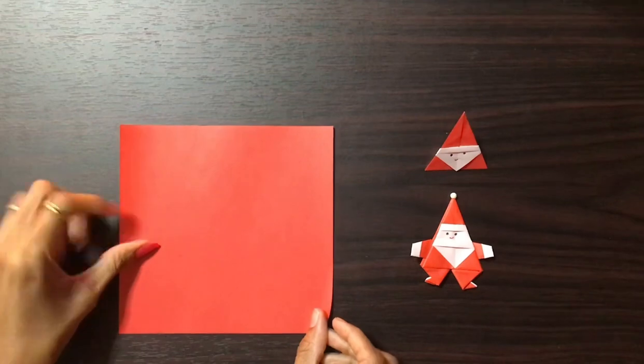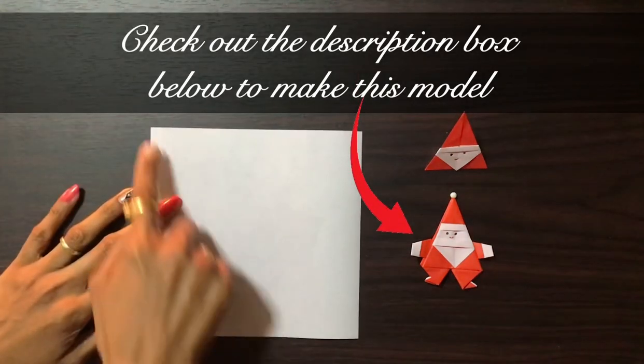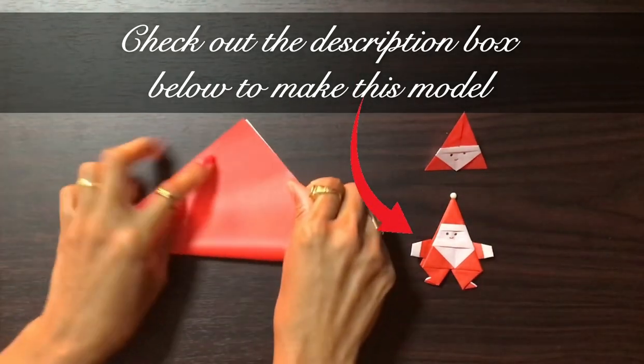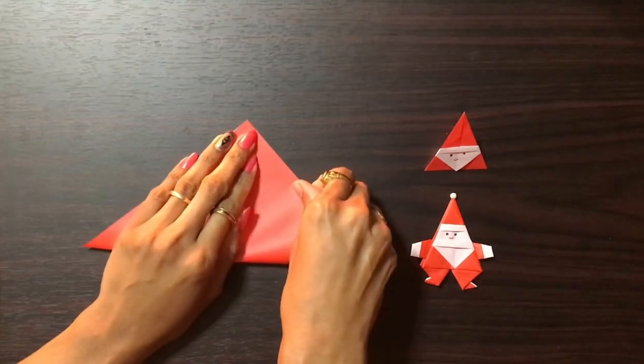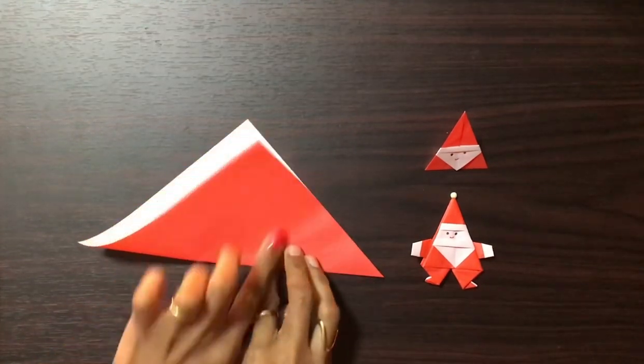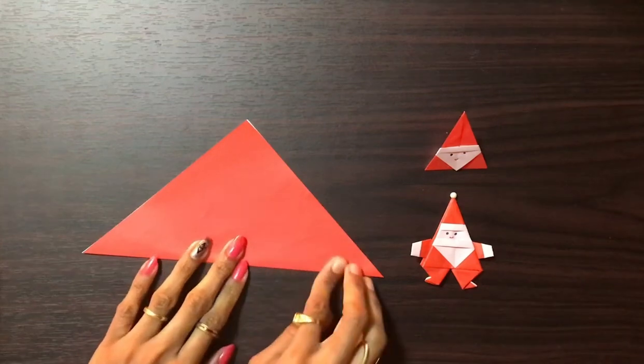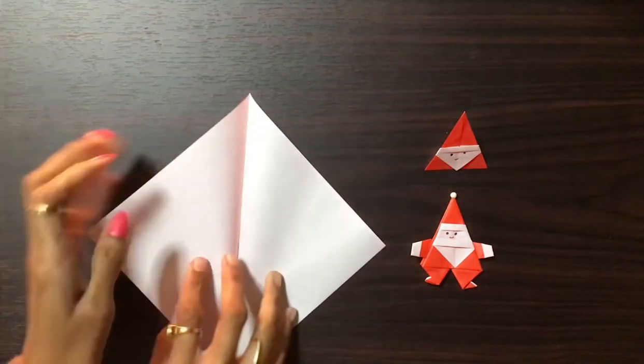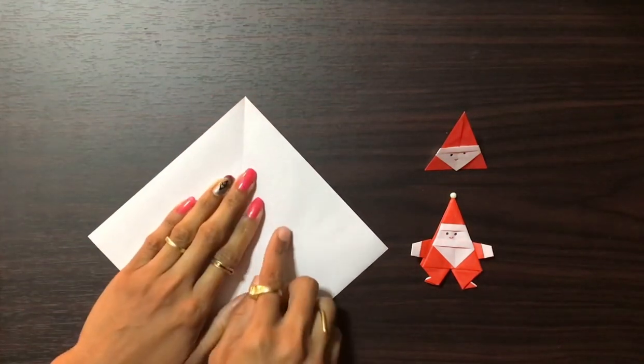To create this model, I'll be taking a 15 centimeter by 15 centimeter square sheet of paper and I'll be starting with the diagonal fold. Now bring these two sides to the center crease.